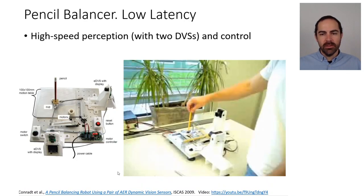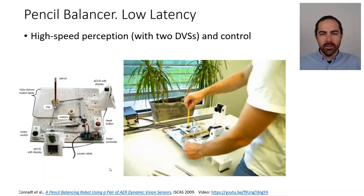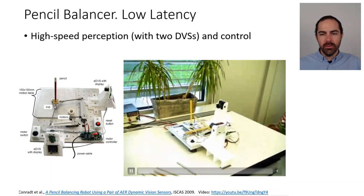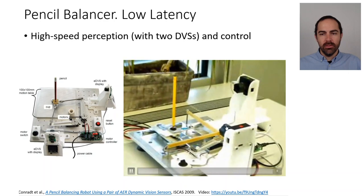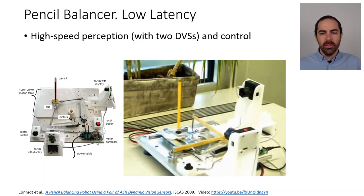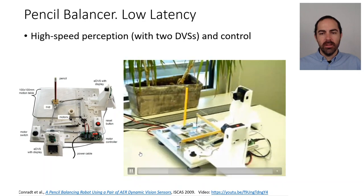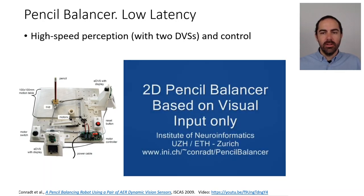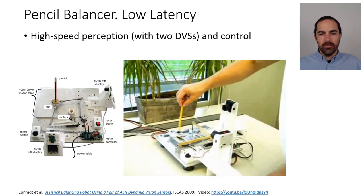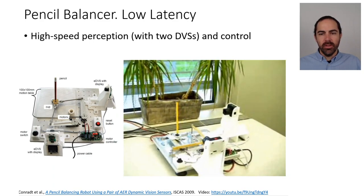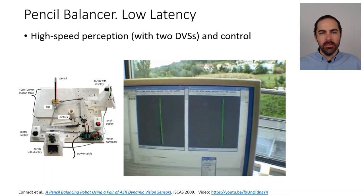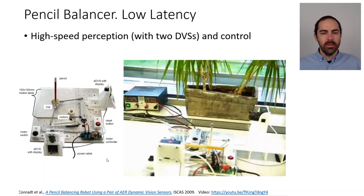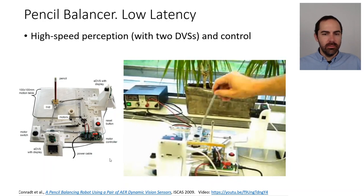Another example is a pencil balancer, also from the University of Zurich. It's really low latency. There are two dynamic vision sensors looking in orthogonal directions, tracking the position of a pencil and giving instructions to motors to keep it balanced — an inherently unstable motion. This shows that these are very reactive sensors: high speed, low latency.